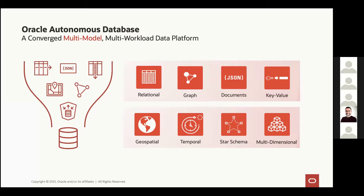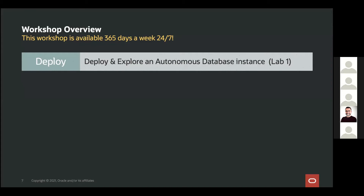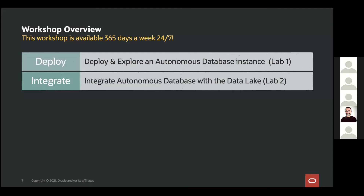Something that would be challenging if you're using specialized databases is that it's very hard to bring all that data together for analytics without going through a lot of special ETL. So, specifically, we're going to start by deploying an Autonomous Database — that's our first lab. Once we deploy that Autonomous Database, we're going to integrate it with a data lake. We have data stored in Oracle Object Storage, and we're going to integrate that data with Autonomous Database in multiple ways — through both our UX as well as through APIs.